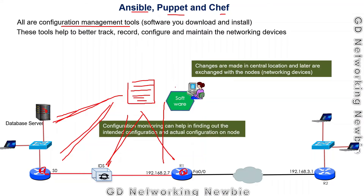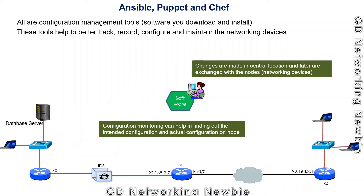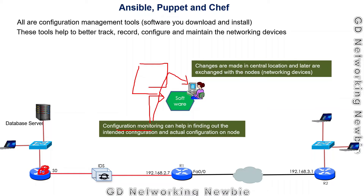Configuration monitoring is also a component of configuration management tools. With configuration monitoring, we can detect inconsistencies between the configuration currently on a router and the intended or desired configuration. If an inconsistency is found, the monitoring component can inform the network administrator, or it can automatically make the required corrections so that the device reflects the ideal configuration.